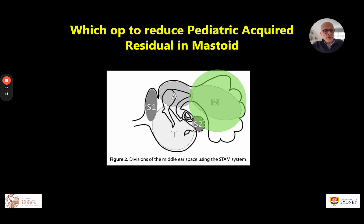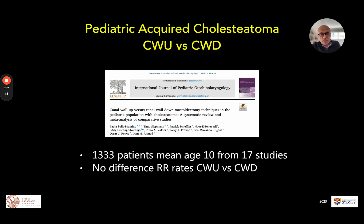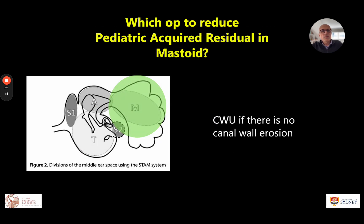What about mastoids? Most centers around the world tend to use canal wall-up surgery for children with mastoid-related disease. An interesting paper published last year compared the two techniques across 17 studies with 1,300 patients and mean follow-up between 3.7 and 11 years, finding no difference in residual rates between canal wall-up and canal wall-down surgery. So the combination of endoscope in the middle ear with endoscope and microscope in the mastoid probably gives similar residual rates to canal wall-down surgery. If there's no canal wall erosion, canal wall-up surgery is the way to go for children.